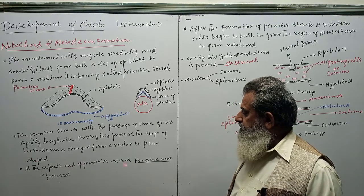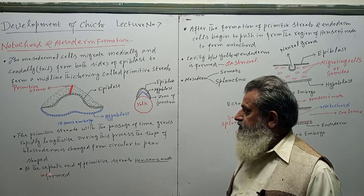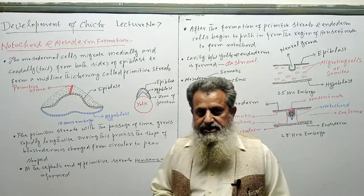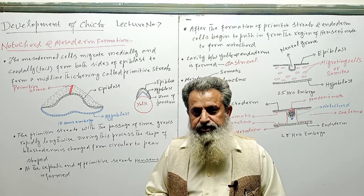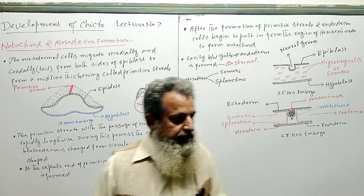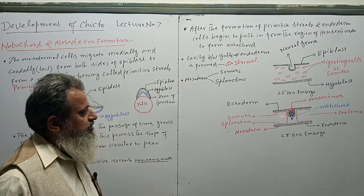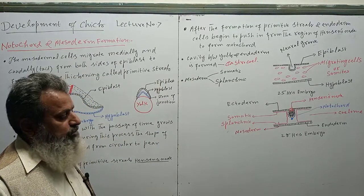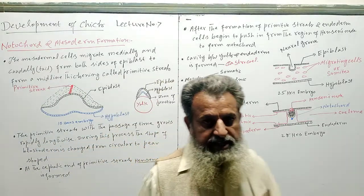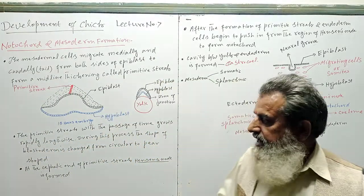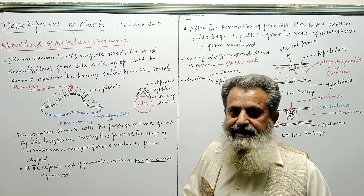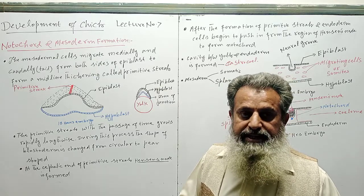At the cephalic or anterior end of the primitive streak, a local thickening is formed. That local thickening is known as Hensen's node. So at the anterior end of the primitive streak, a local thickening is formed and that local thickening is known as Hensen's node.